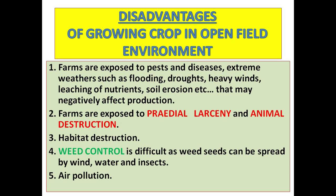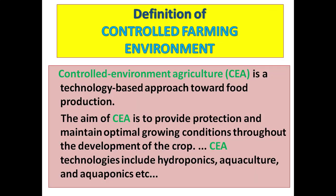Number five, air pollution. The main disadvantage is that crops outside are exposed to a wide variety of elements that may affect production negatively.